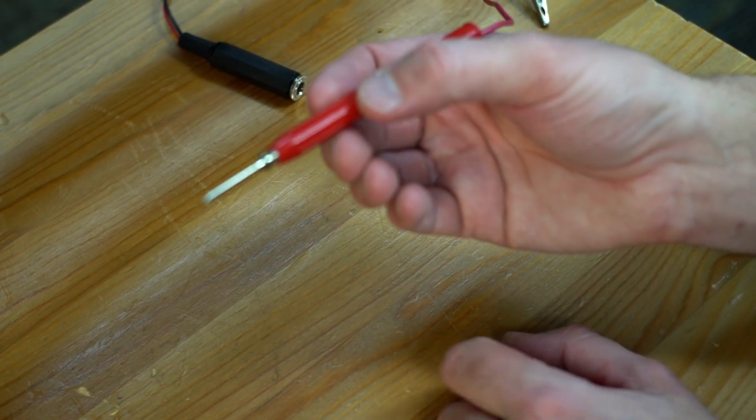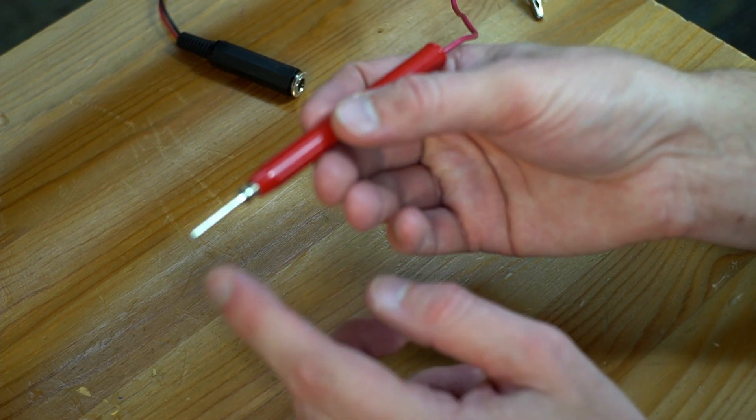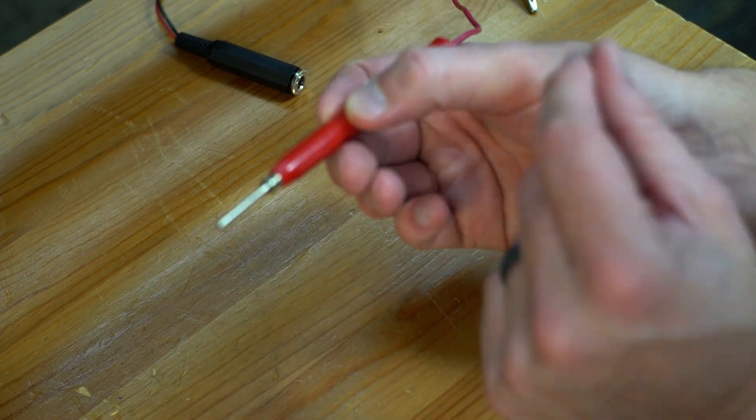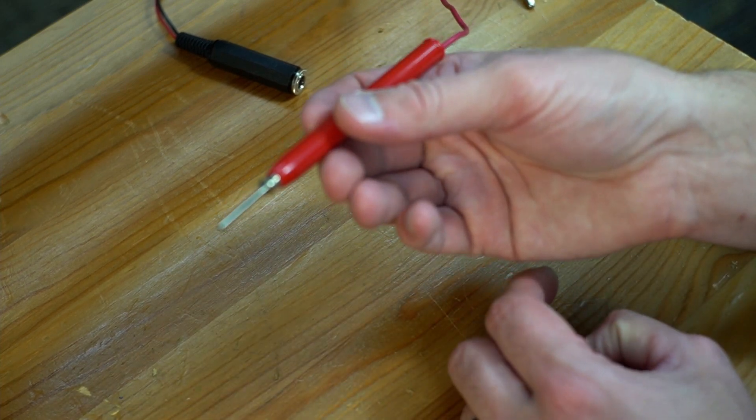And then I can use this to insert my signal wherever you want. You could also use alligator clips on here. Sometimes I'll clip an alligator clip onto this and then clip that on elsewhere. So you've got a lot of different options.